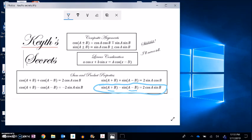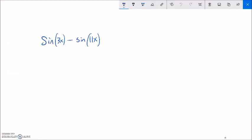So 2 cosine is what I'm looking for, is what I'm going to end up with. So I'm going to end up with 2 cosine of something, sine of something. I know that A and B add to 3x and I know that A minus B, the difference is 11x.